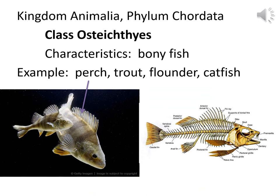Perch, trout, flounder, catfish, and other assorted bony fish would be in Class Osteichthyes. The 'osteo' part refers to bone — like osteoporosis would be holes in the bones — and 'ichthyes' is still fish, so Osteichthyes means bony fish. In the lab we do have a really cute skeleton left over from a fish that does actually have a skeleton much like our human skeleton.